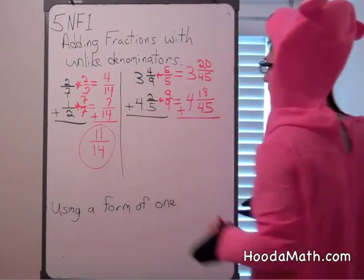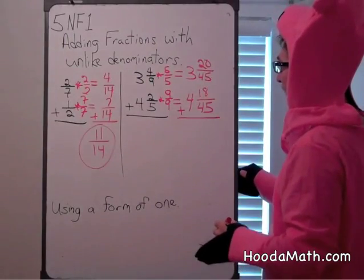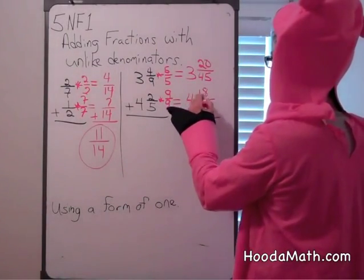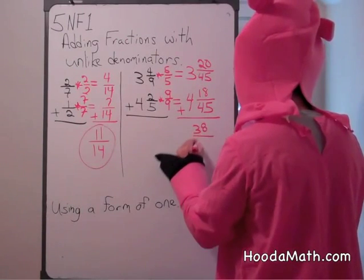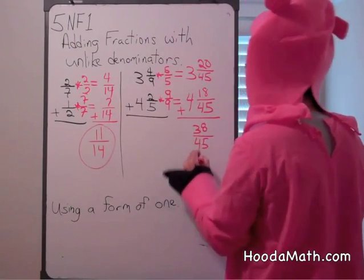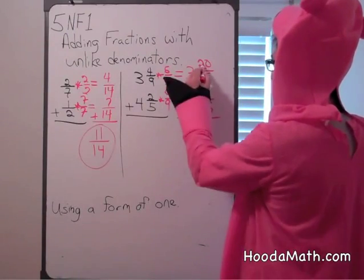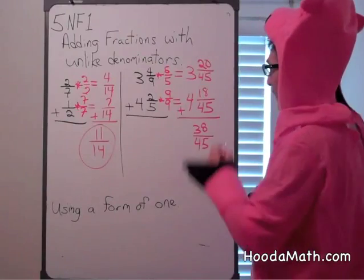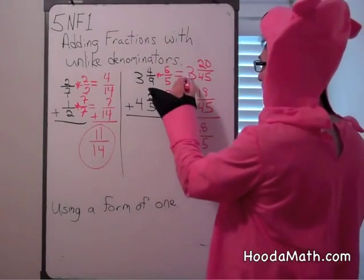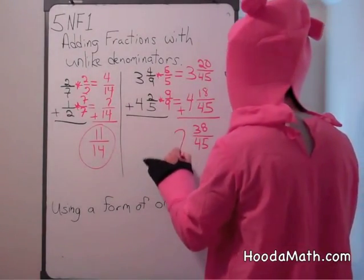And now we add. 20 plus 18 is 38 forty-fifths. 0 plus 8 is 8. 2 plus 1 is 3. We only add the numerators, or the top number of the fraction. And then 3 plus 4 is 7.